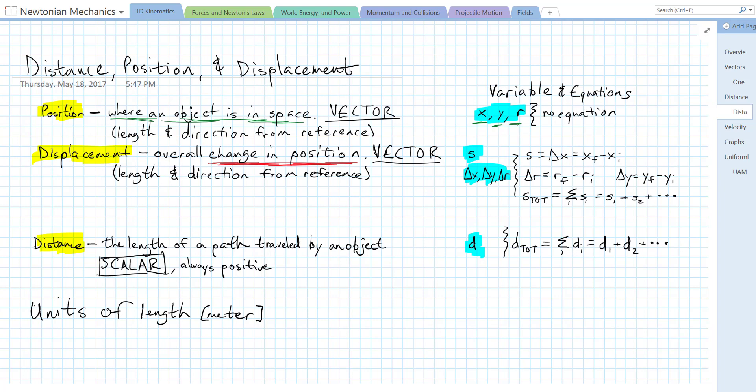Displacement is path independent. Displacement is also a vector. If I move four meters to the east, or I drive 25 kilometers north, my displacement is 25 kilometers. That's the magnitude of the displacement, and the direction is to the north.